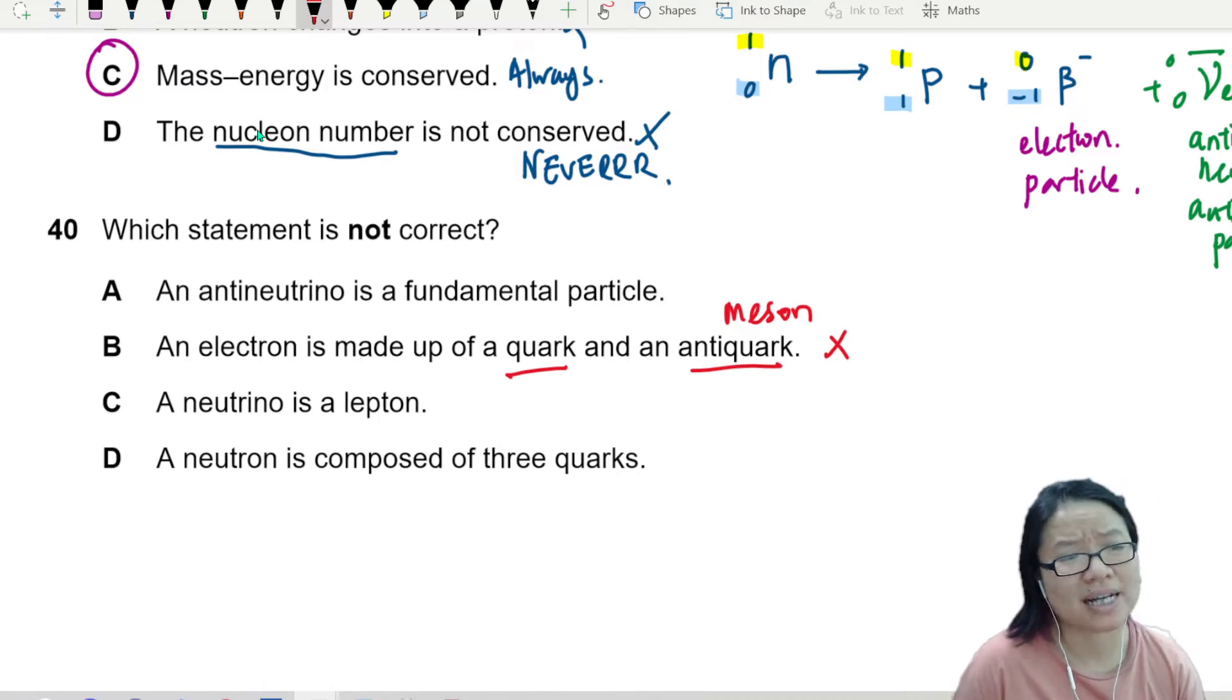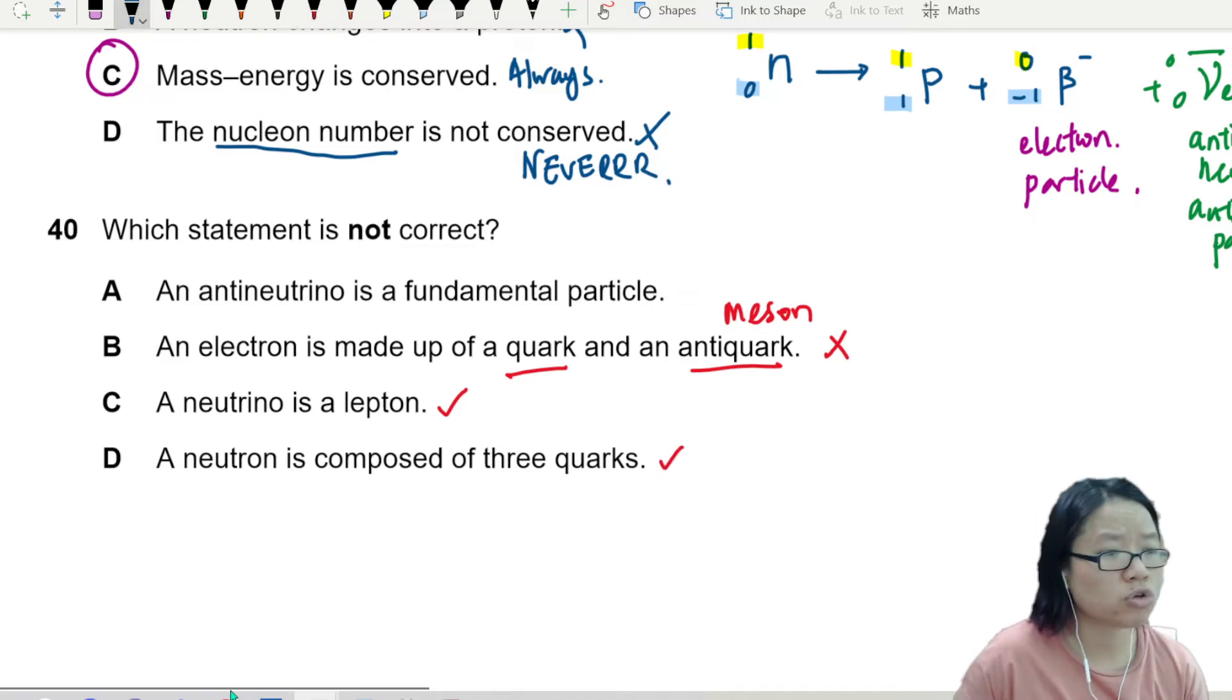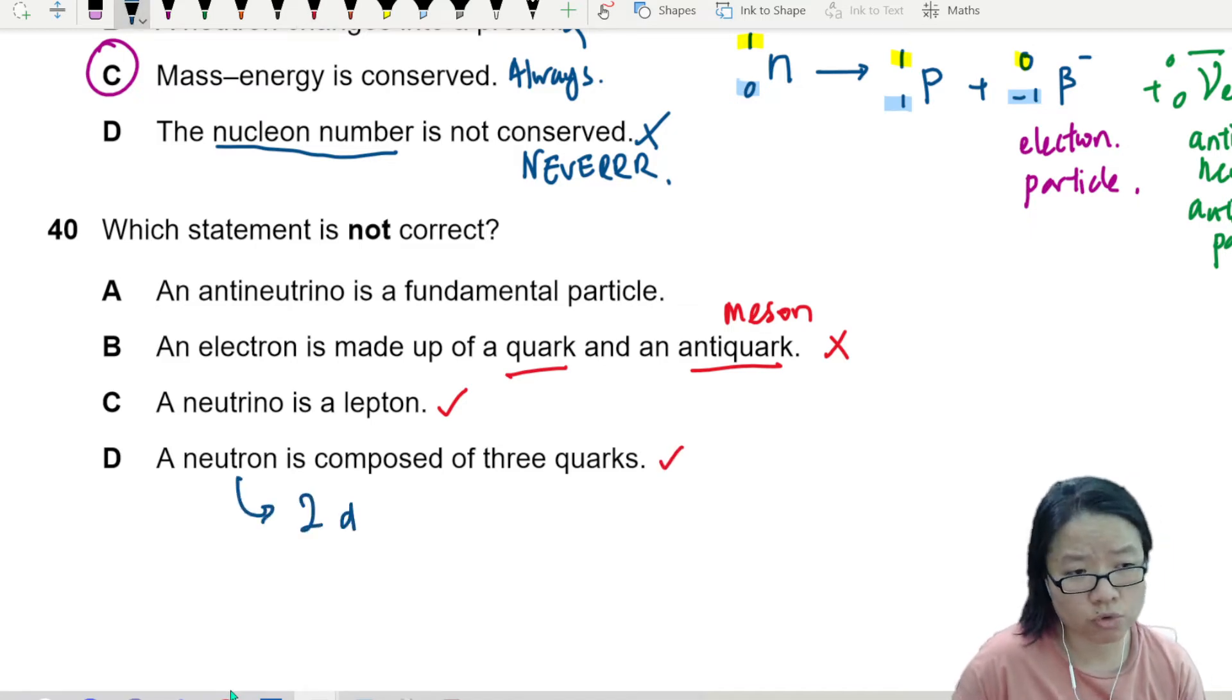Neutrino is a lepton. Neutrino is a lepton, yep. A neutron composed of three quarks, correct? Because a neutron composed of two down quarks plus one up quark.